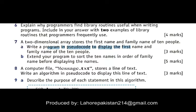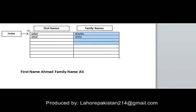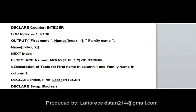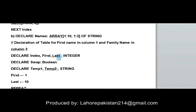In part B, you have to extend your program to order the family names in ascending order. So the second column will be arranged in ascending order. To make that change, the array stays the same, and we just need to declare two new variables named 'first' and 'last', and then declare a variable named 'swap' which will hold either a false or true value.